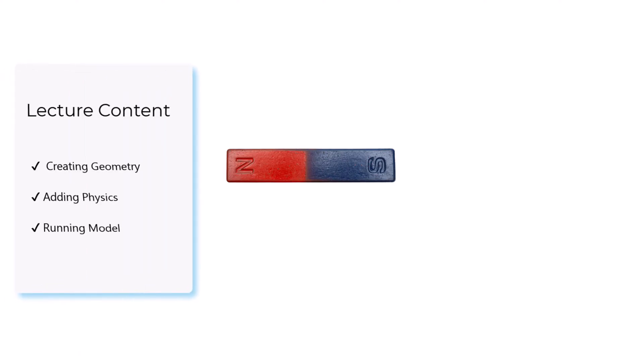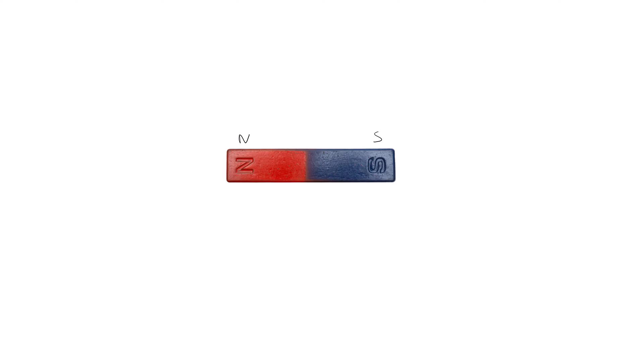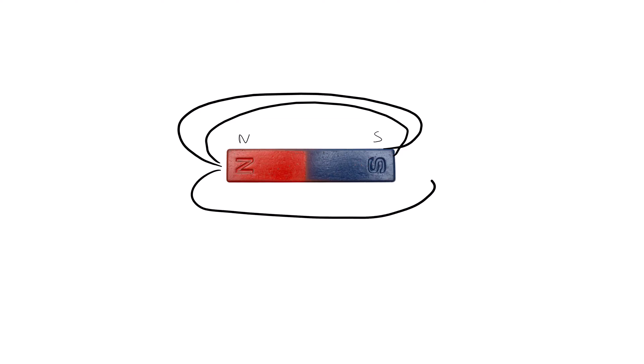Hello everyone and welcome back. In this video we will learn how you can model a permanent magnet in COMSOL Multiphysics. We will have a complete tutorial starting from creating the geometry, adding physics, and running the model. We'll start with a bar magnet — we know it has two poles, north and south, and the field lines travel from north to south.